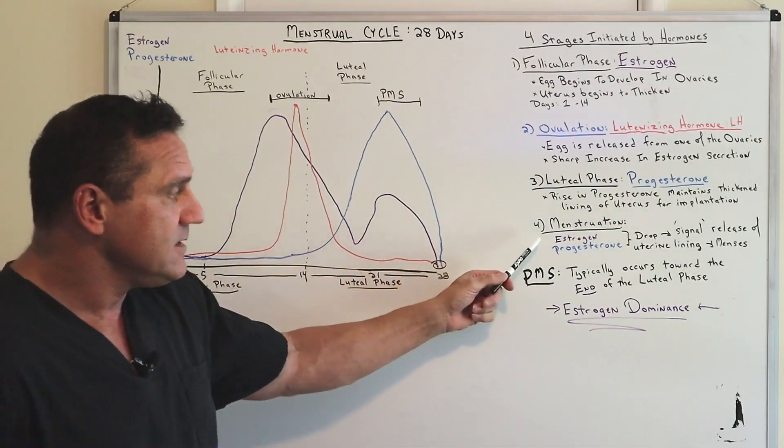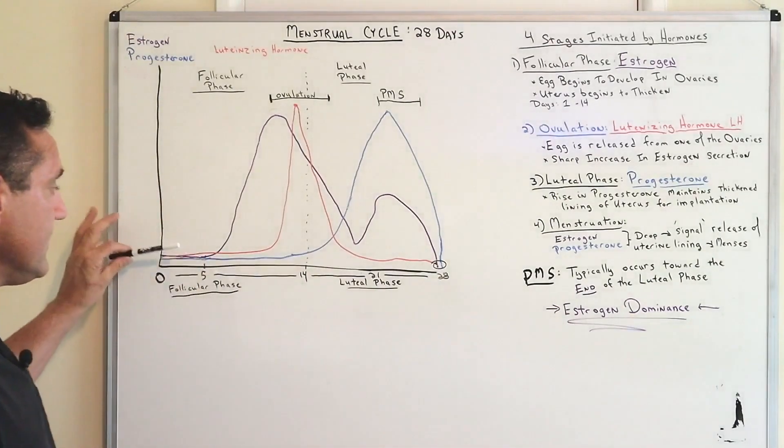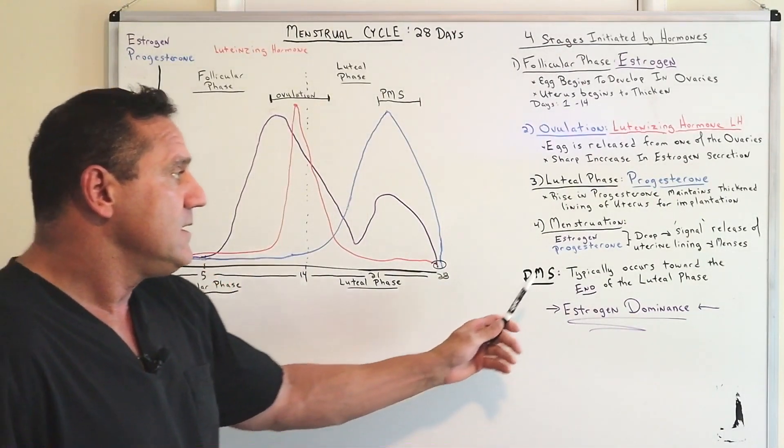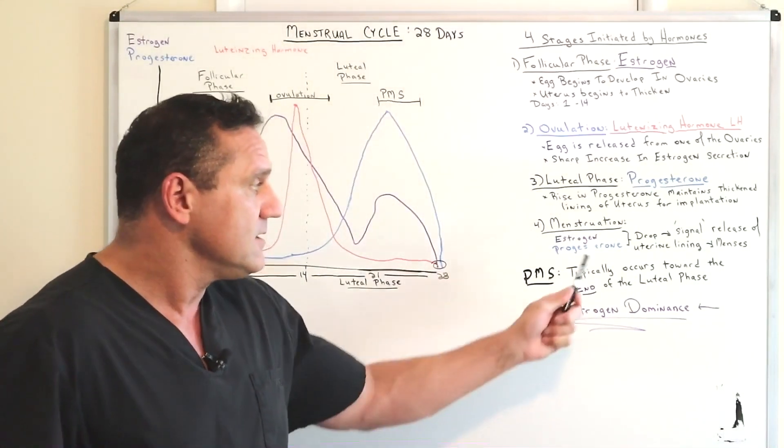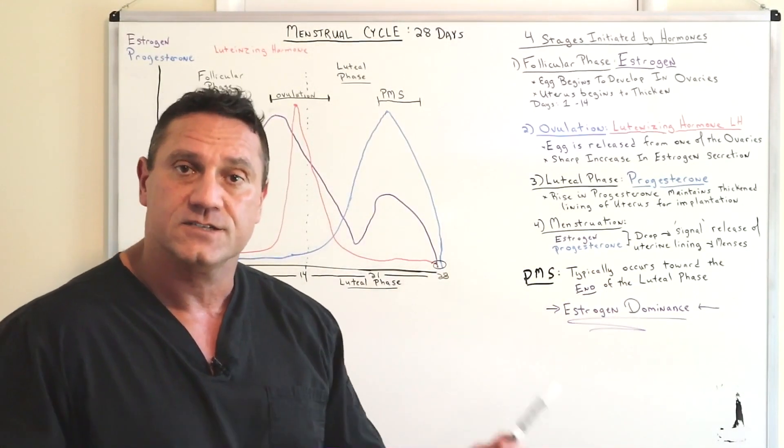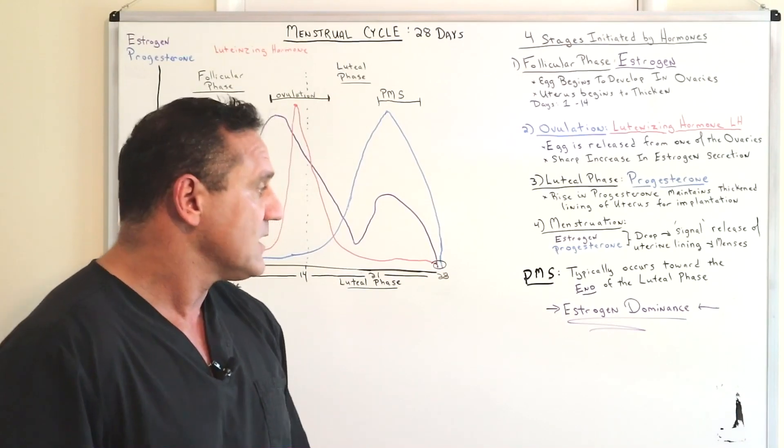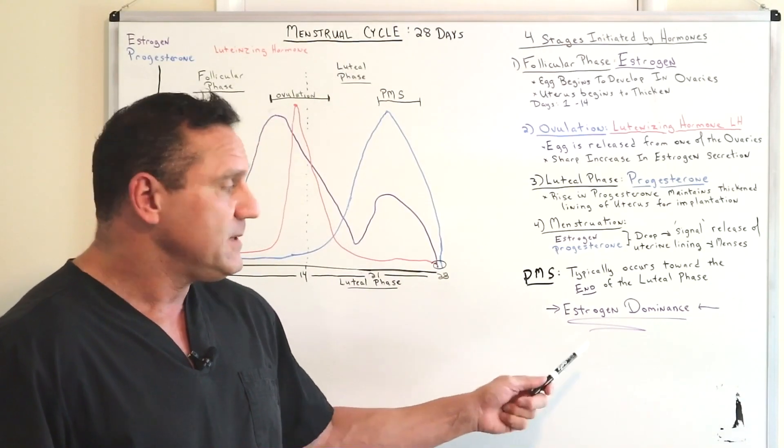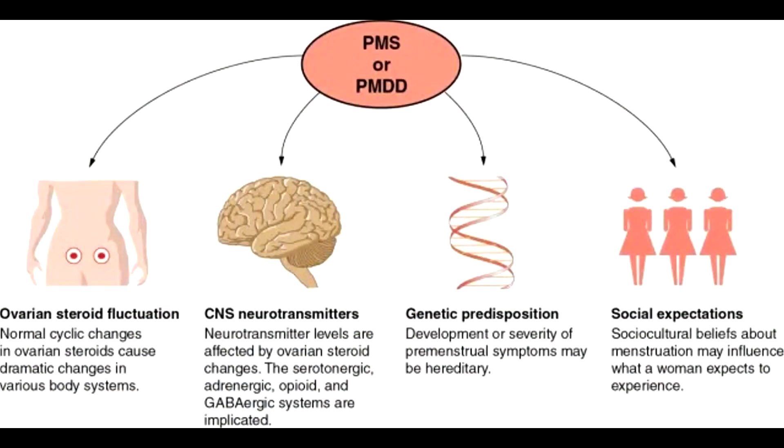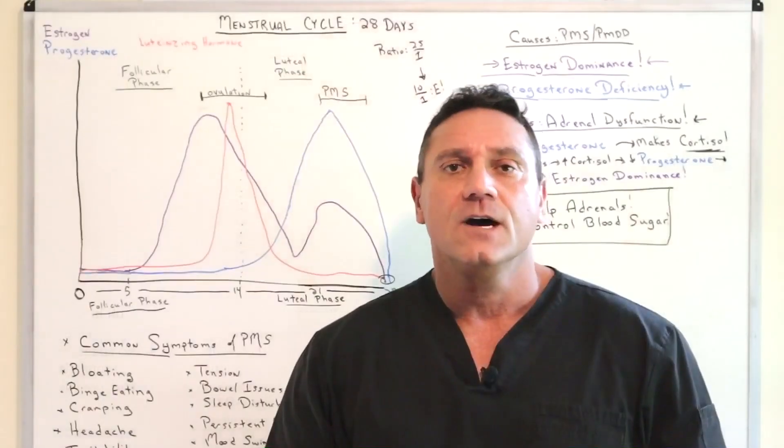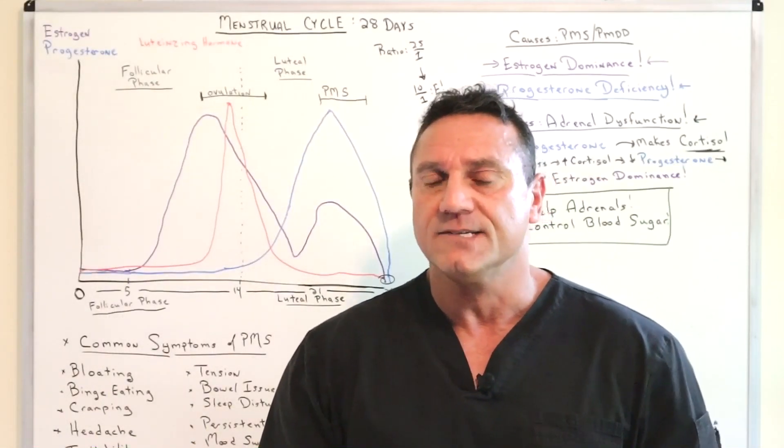So which triggers menstruation. So during menstruation, the estrogen and progesterone levels are very low. And the drop in the hormones signals the release of the uterine lining. And then menses occur. Now, PMS typically occurs toward the end of the luteal phase and PMS happens when it's estrogen dominant. So how does that mean estrogen dominant? Let's talk about what causes PMS.